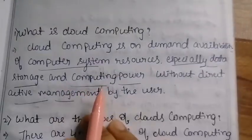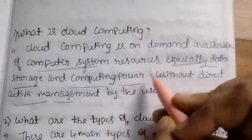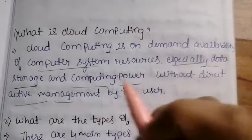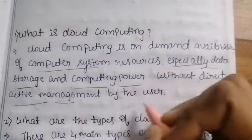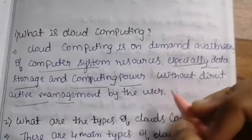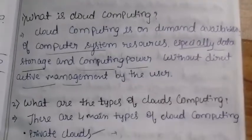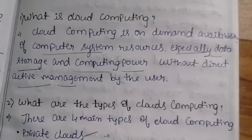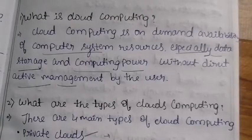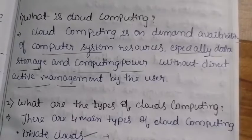Cloud computing is the on-demand availability of computer system resources, especially data storage and computing power, without direct active management by the users. With cloud computing, you can send data through the network — it goes to the cloud.